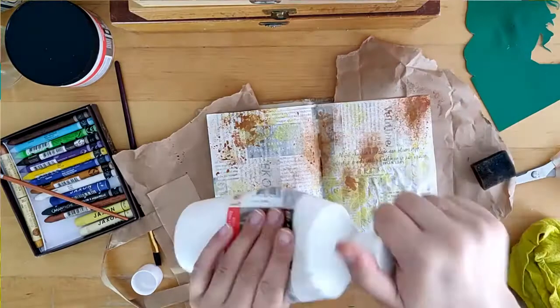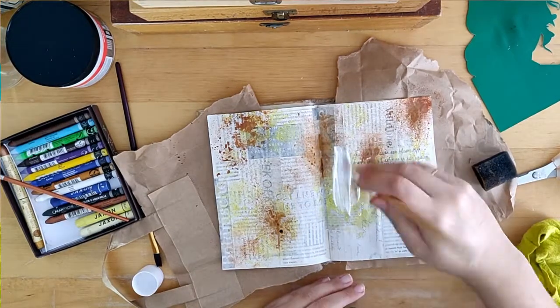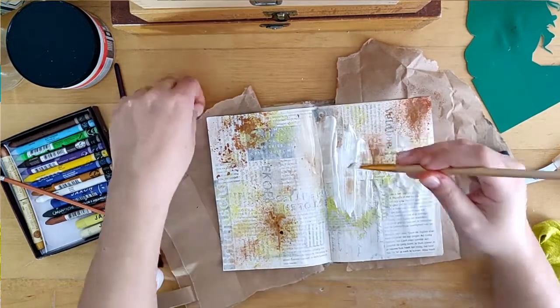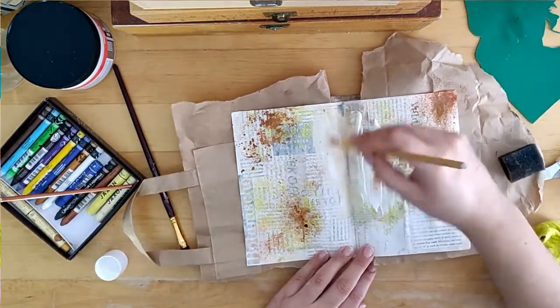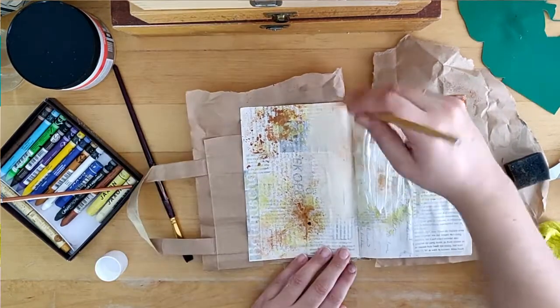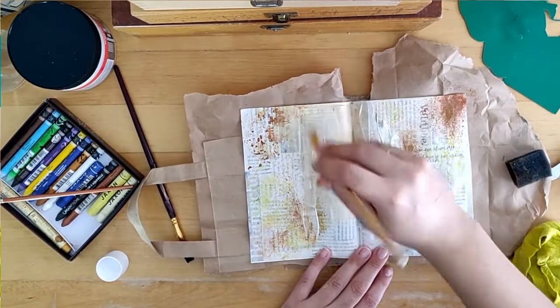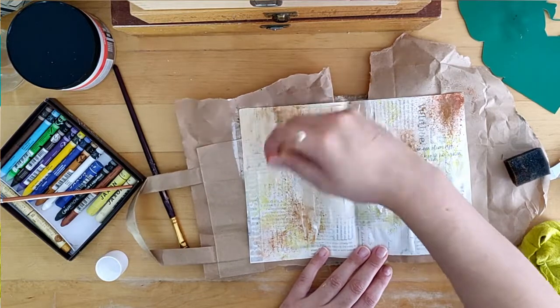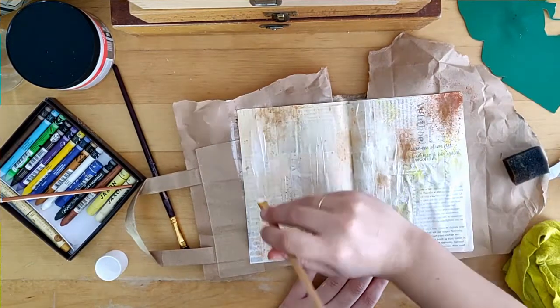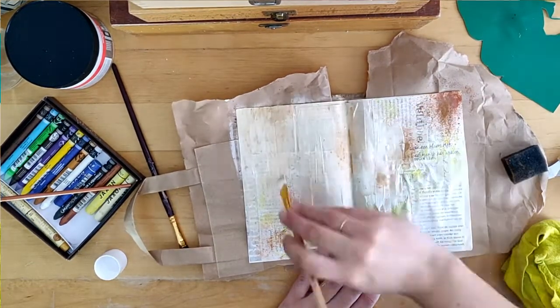And this is where we are now. I decided that I absolutely did not like the yellow and the brown together with the background. I just didn't like it. So I decided to cover it with a thin layer of white gesso. Just white gesso, not mixed with clear gesso.